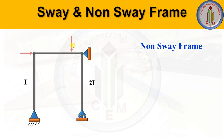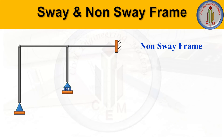Regardless of the factors — whether eccentric loading, unsymmetrical sections, unsymmetrical geometry, or different end supports — if we provide a proper horizontal support, the frame will become a non-sway frame. That support will not allow the frame to sway. Even with different geometry or different end supports, providing a proper horizontal support converts the frame to a non-sway frame.